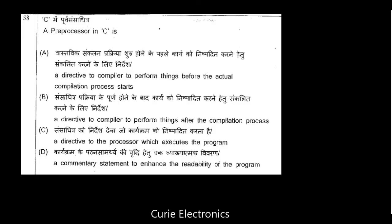Question number 58: A preprocessor in C is — the preprocessor is for the compiler. It is a directive to the compiler to perform things before the actual compilation process starts. Option A is the right answer.